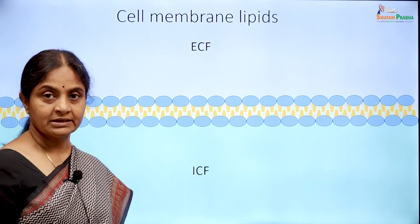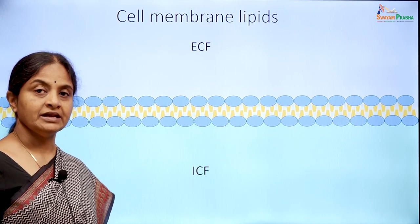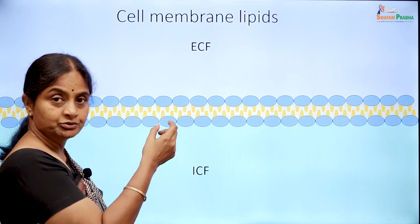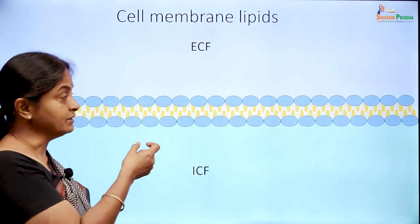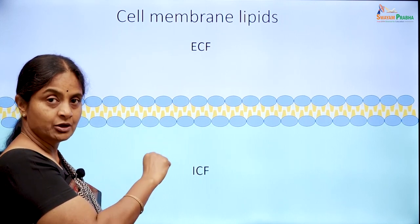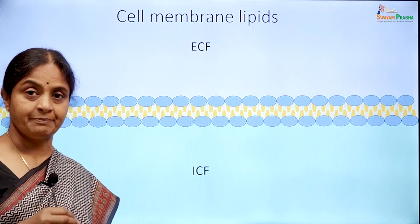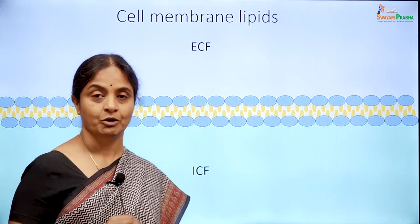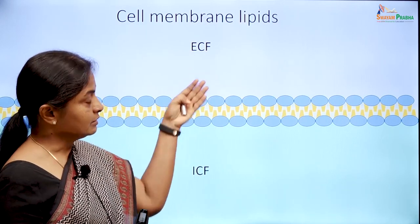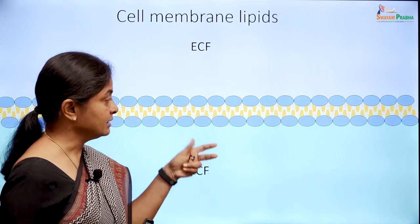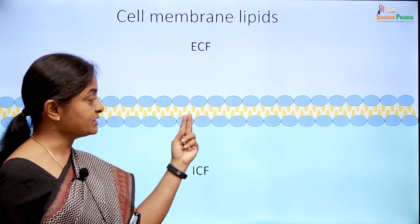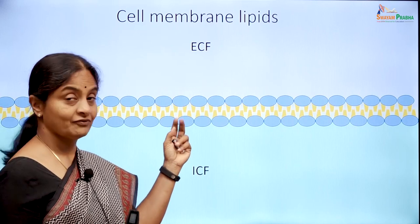We have learnt that the lipids of the cell membrane are arranged as a bilayer. Each of these in the cartoon represents a molecule of lipid. The blue bubble here represents the hydrophilic region of the lipid and the yellow tails represent the hydrophobic region of the molecule.